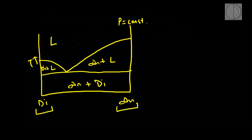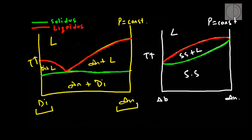Now let us compare this diagram with the solid solution phase diagram of the anorthite-albite system. In both of these diagrams, the green line represents the solidus and the red line represents the liquidus. We can see that at higher temperatures in both fields, the liquid phase is stable.